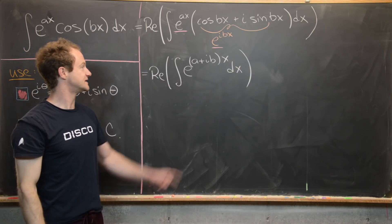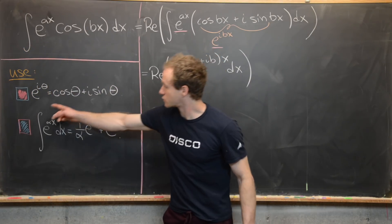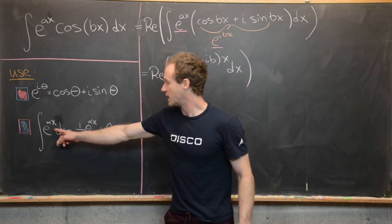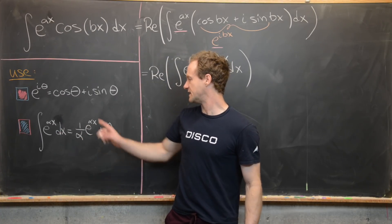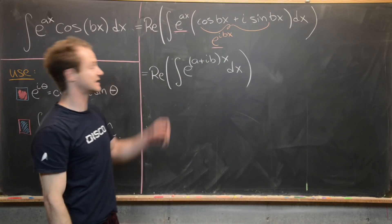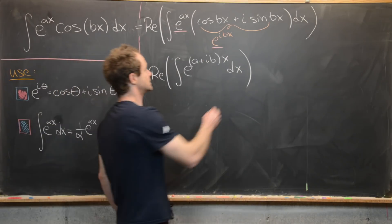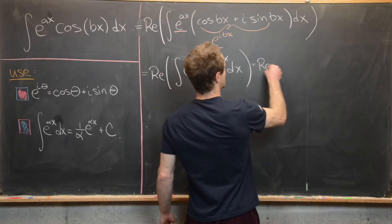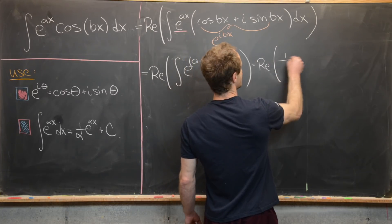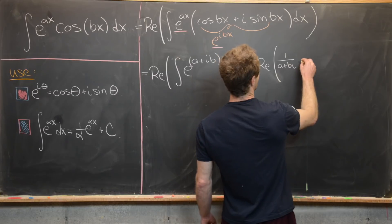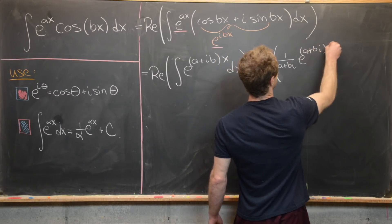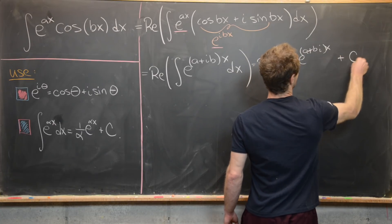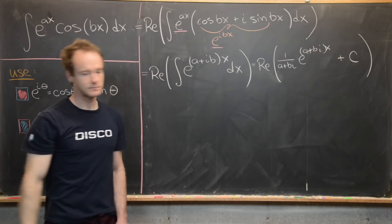Now what I want to do is use this rule over here. In other words, I take the antiderivative of e^(αx), I get (1/α)e^(αx) plus a constant. So let's see what we do if we get that. That's going to give us the real part of (1/(a+bi))·e^((a+bi)x) plus a constant c.